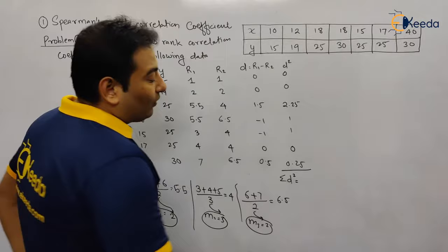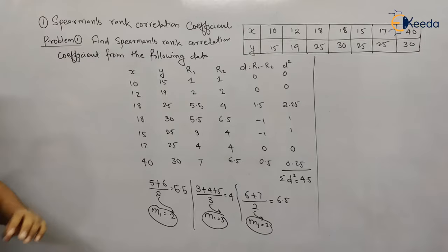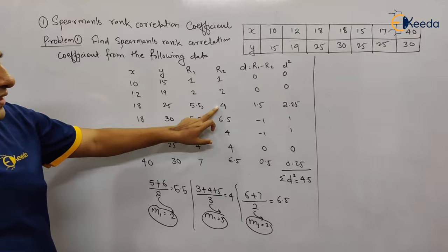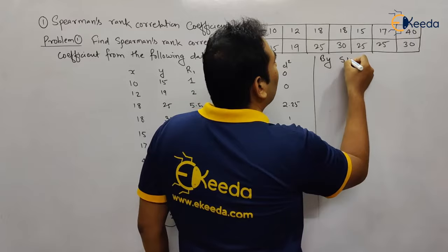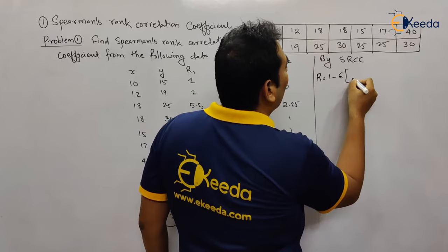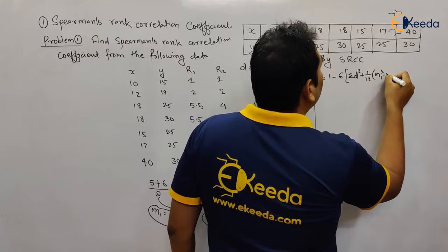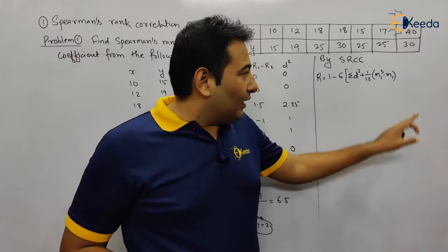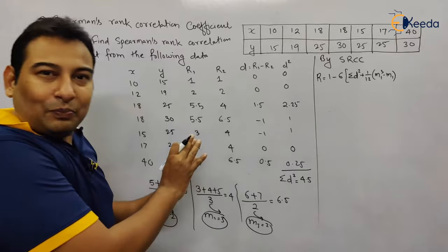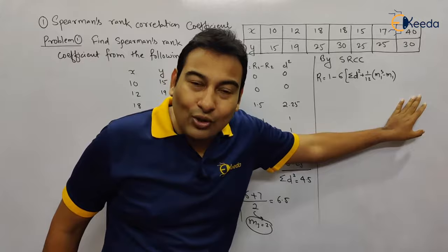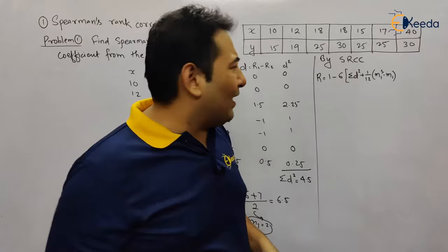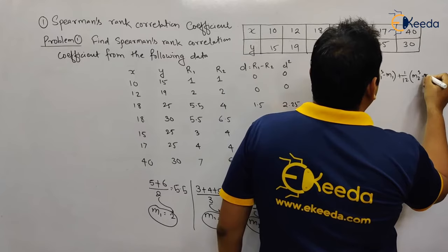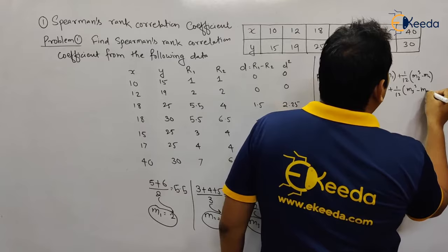Since ranks are repeated, we use the correction formula for Spearman's rank correlation: r = 1 minus 6 times [Σd² + (1/12)(m1³ − m1) + (1/12)(m2³ − m2) + (1/12)(m3³ − m3)] all divided by (n³ − n). Note that the (n³ − n) term is in the denominator of the entire expression, not just part of it.